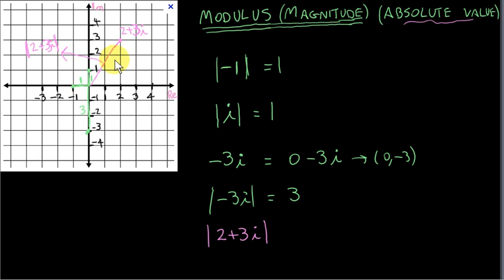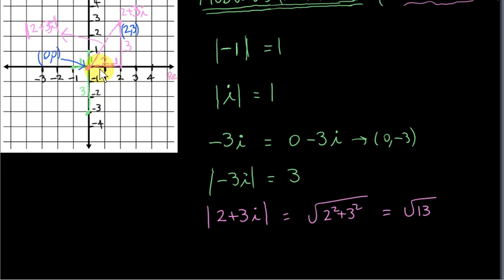So, what is this distance? Well, we can just construct a right angle triangle here. We can get the vertical distance between 2 plus 3i and the origin. It's this distance here, which is 3. And we can get the horizontal distance, which is 2. We have a right angle triangle. So we can just use Pythagoras' theorem to find the modulus. So, it's the square root of 2 squared plus 3 squared. That's root 4 plus 9. That's root 13.